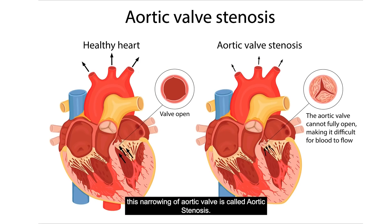The aortic valve is the valve between the left ventricle and the aorta. Over years, with the progression of age, this valve can get narrowed. This narrowing of the aortic valve is called aortic stenosis.